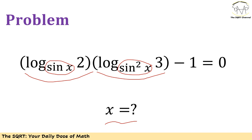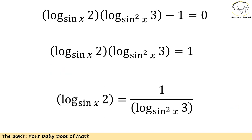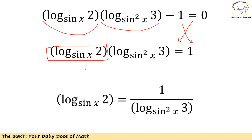To solve this problem, let's start with the original equation: log of 2 in base sine of x times log of 3 in base sine squared of x minus 1 equals to 0. We rearrange it so the equation equals to 1. Now let's use the identity: log of 2 in base sine of x equals 1 over log of 3 in base sine squared of x.